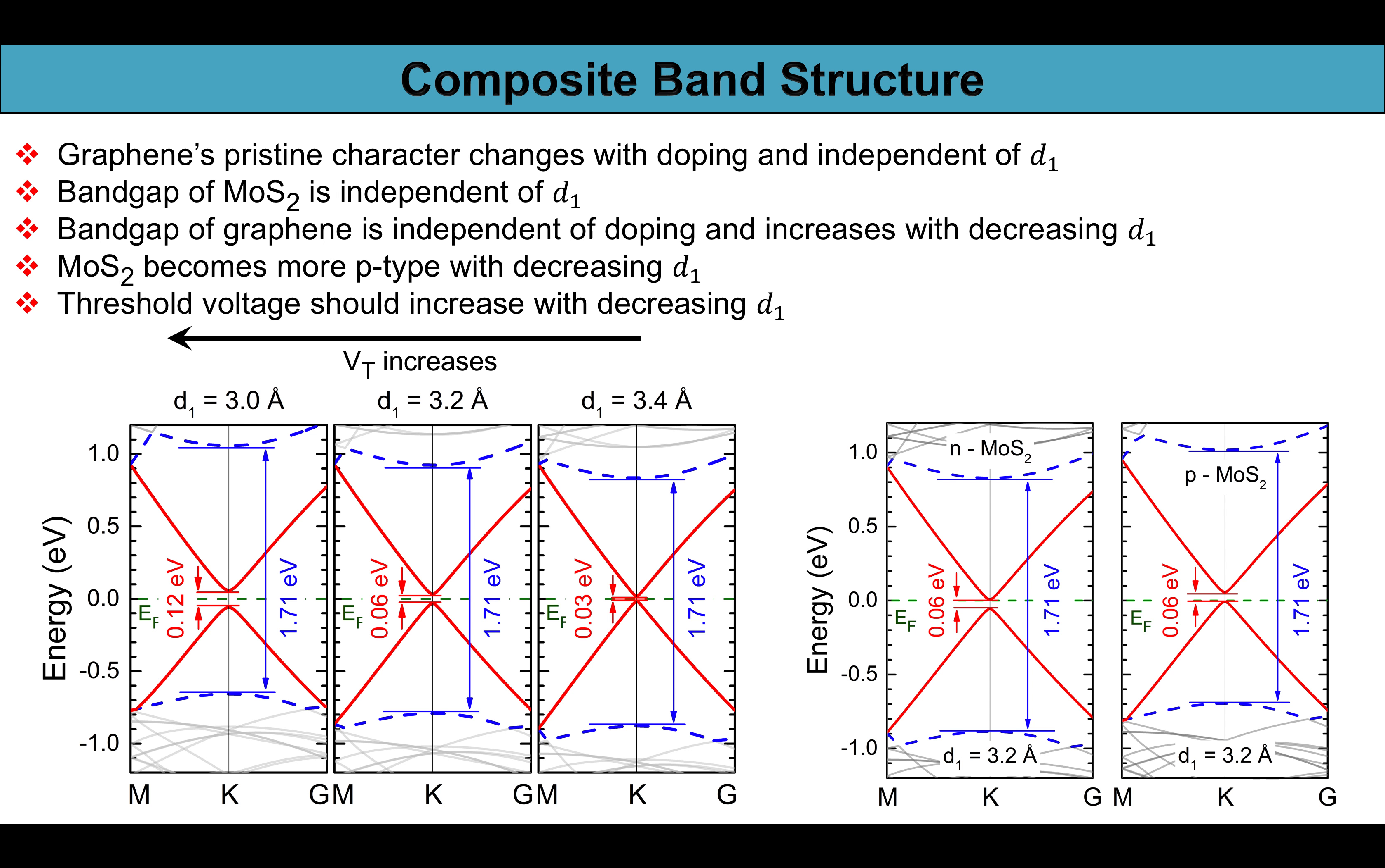Graphene remains effectively undoped in this case and only becomes n or p type depending upon the doping in MoS2 as shown in the band structure. In all the five cases MoS2 has an unaltered bandgap of 1.71 electron volt but MoS2 becomes more p type with decreasing d1 and thus the threshold voltage of the device is expected to increase.